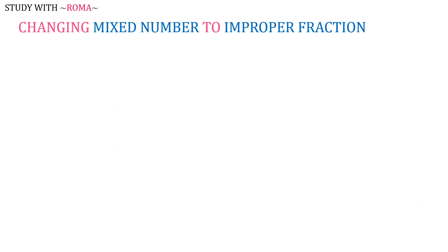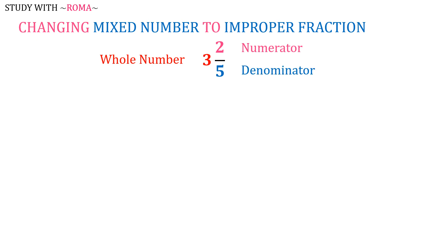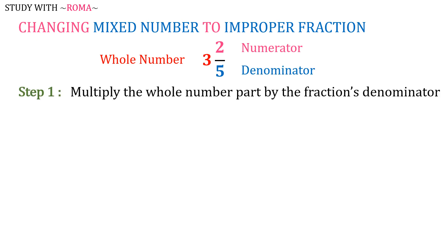Let's discuss changing mixed number to improper fraction. Let's have 3 and 2 fifths as our example. 3 is the whole number, 2 is the numerator, and 5 is the denominator. Step 1: multiply the whole number part by the fraction's denominator. So 5 times 3 is 15.